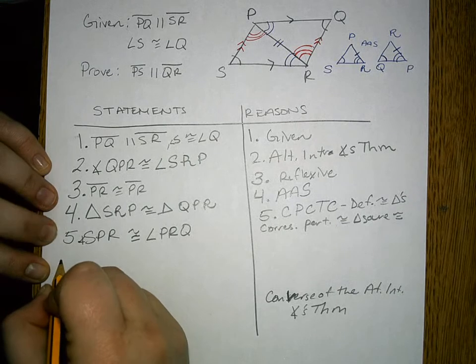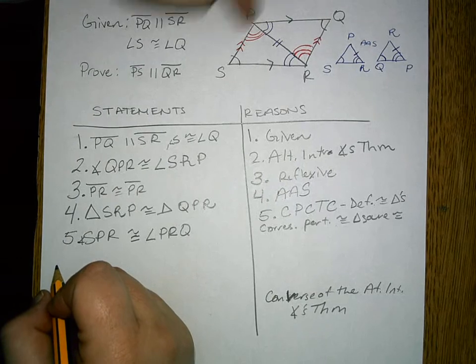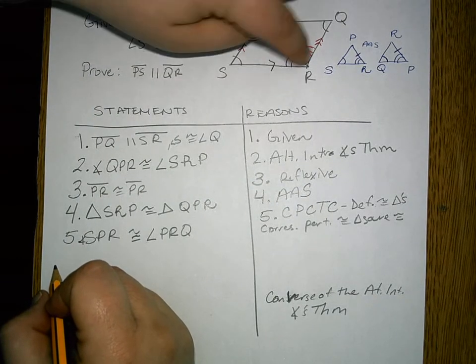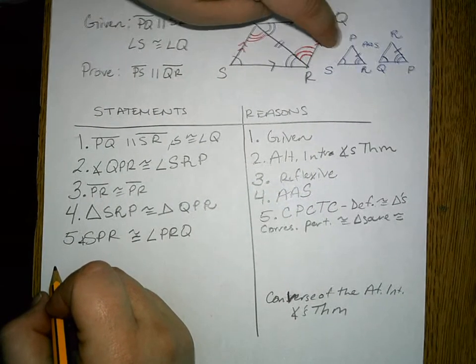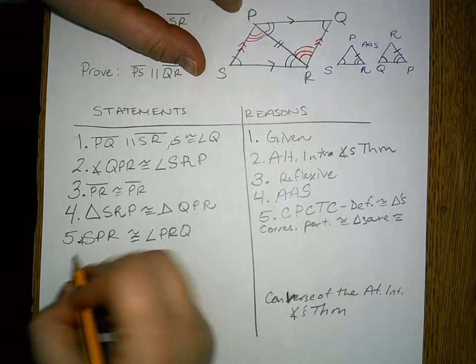Then, we know that since these two alternate interior angles are congruent, then the lines that form, that help form those angles with the transversal are going to be parallel.